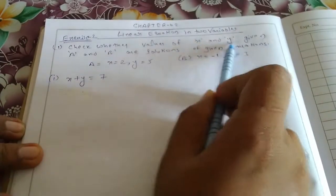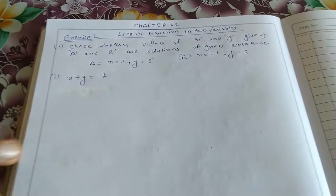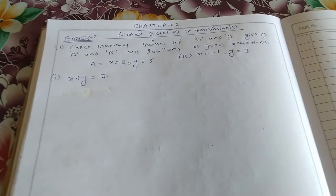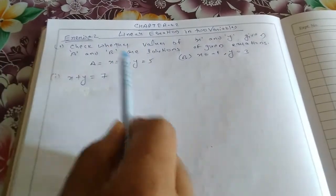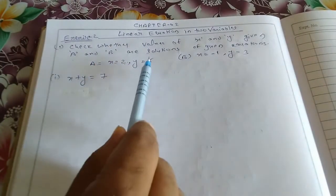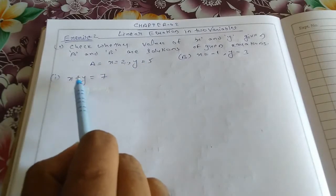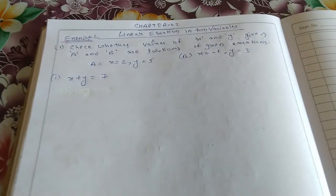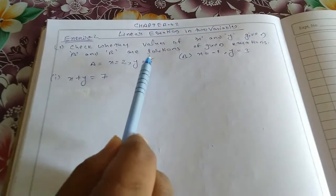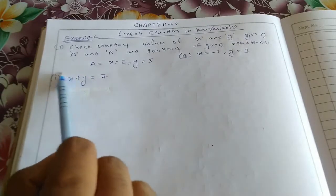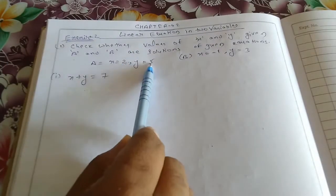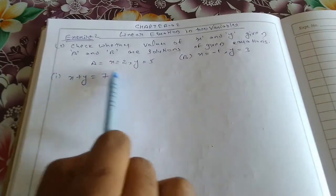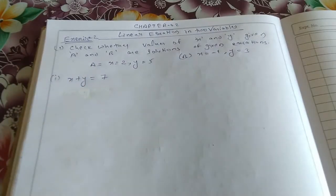Check whether the value of x and y: given value A is x equal to 2 and y equal to 5, and B is x equal to minus 1 and y equal to 3. So what the question says is A and B are solutions of the given equations. Solution means we have to put x equal to 2 and y equal to 5 and solve. We can see whether these two values x equal to 2 and y equal to 5 satisfy this equation.